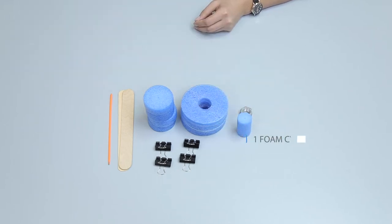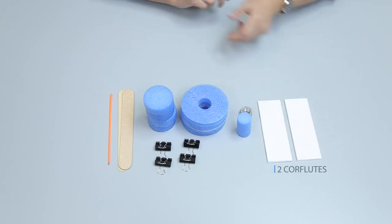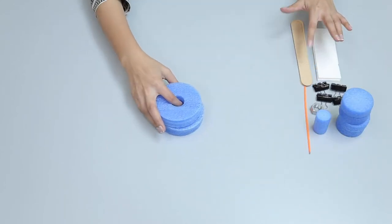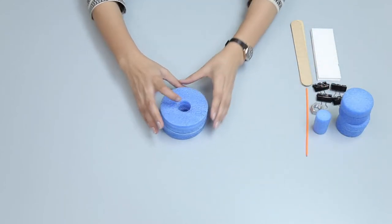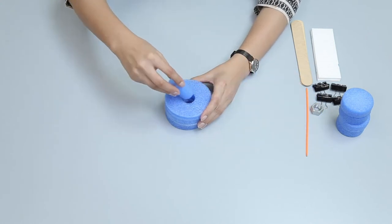one foam cylinder, and two core flutes 15 by 5 centimeters. Place two foam rings large with holes one over another. Insert the foam cylinder in the hole of the foam rings.